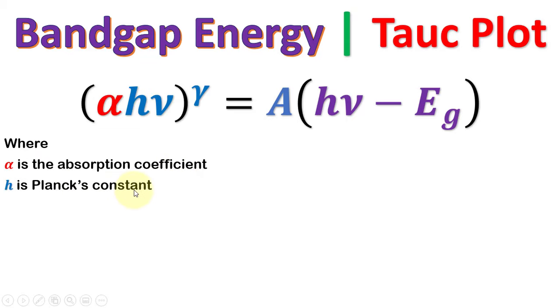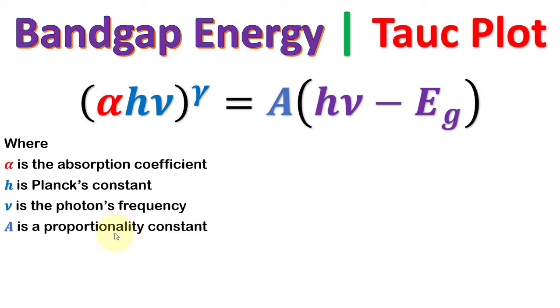h is Planck's constant, nu is the frequency of the incident photon, A is a proportionality constant which is determined by the index of refraction, electron and hole effective masses. However, it is usually taken for amorphous materials and E_g is the band gap energy.